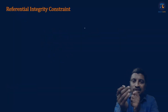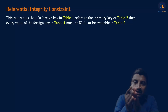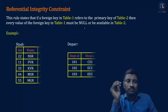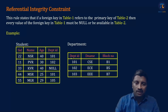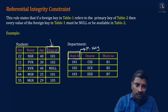The next one is Referential Integrity Constraint. This rule states that if a foreign key in table 1 refers to the primary key of table 2, then every value of the foreign key in table 1 must be null or it should be available in table 2. So let me explain with an example. Suppose we have two tables: the first one is student and the second one is department. Let us consider the table department. This department table has three attributes: department ID, department name, block number. Assume that department ID is the primary key for this table.